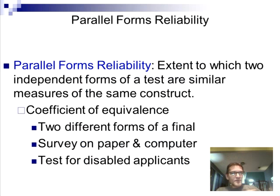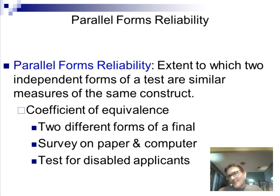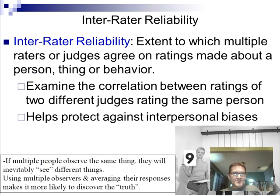Parallel forms reliability is sometimes harder to do. You give somebody two different versions of the same test. It's sometimes difficult because how do you know that two forms of a test are equal to each other? It's limited to certain situations.